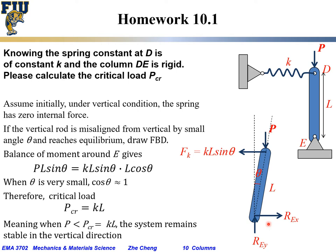In the FBD, assuming it rotates clockwise, the spring gets a little bit longer. As a result, at D we have a horizontal force FK equal to the spring constant K times the displacement. The length of the rod is L and the angle is theta, so L times sine theta gives the displacement, and multiplying by K gives the horizontal force. This horizontal force must be balanced by another horizontal force at point E, which is our REX — the reaction force at E in the X direction.